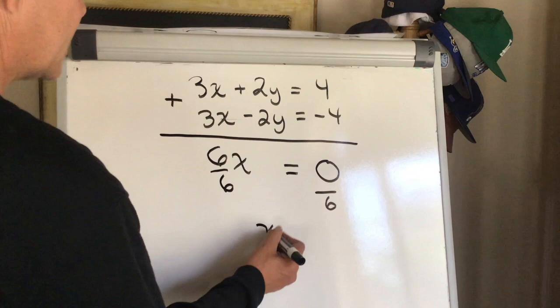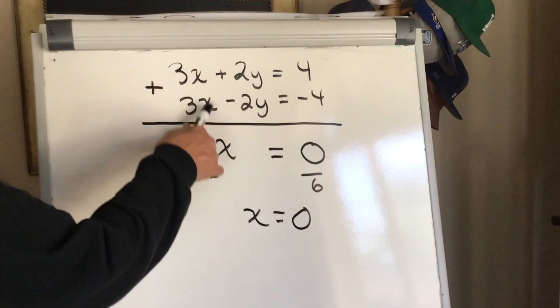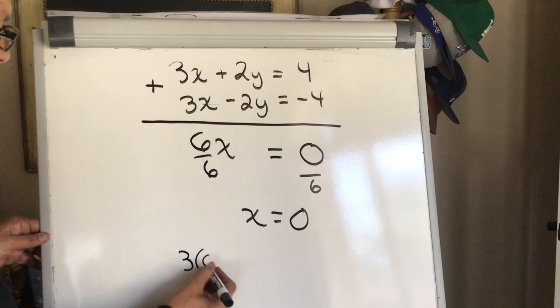Now I'm going to take the x and plug it into either one of these equations, it's up to you. So here, instead of x I put 0 plus 2y equals 4.